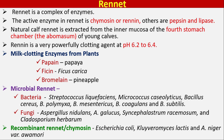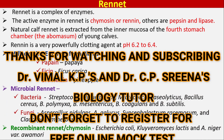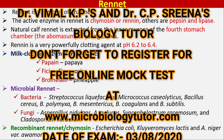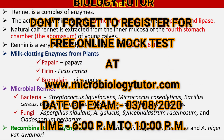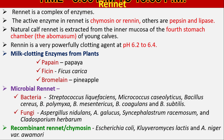Natural calf rennet is extracted from the inner mucosa of the fourth stomach chamber, known as the Abomasum, of young calves. Rennet is a very powerful clotting agent at a pH of 6.2 to 6.4. Milk-clotting enzymes from plants include Papain from Papaya, Ficin from Ficus carica.